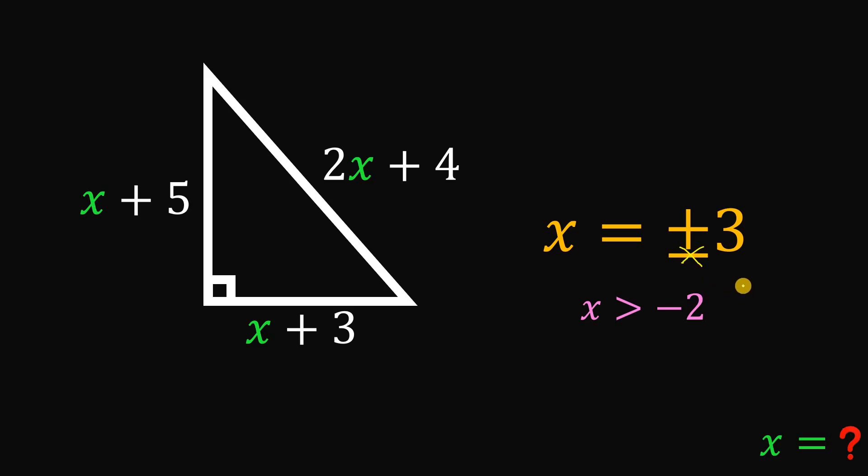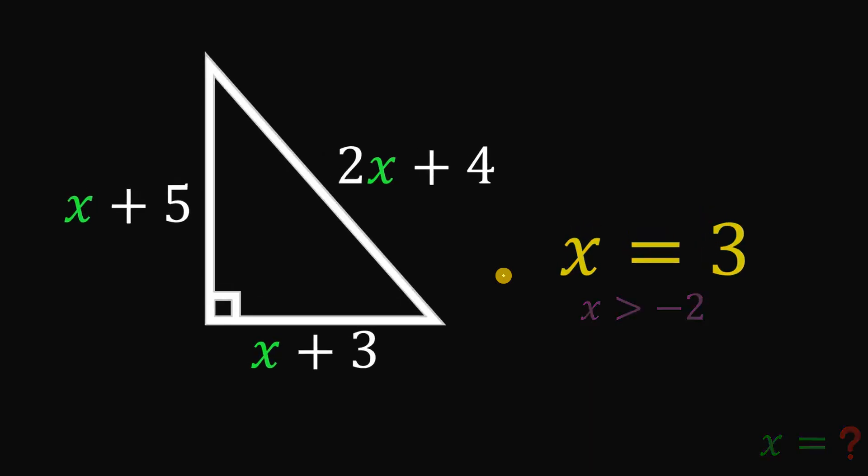And therefore, we can say that the only value of x that satisfies this triangle or the value of x that we have a legit right triangle must be equal to positive 3. And this is our answer to this question.